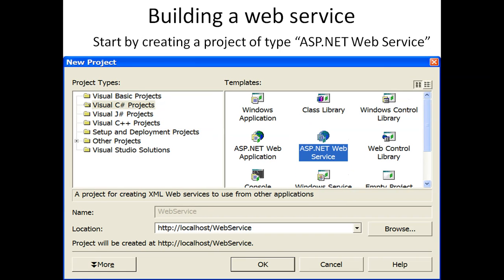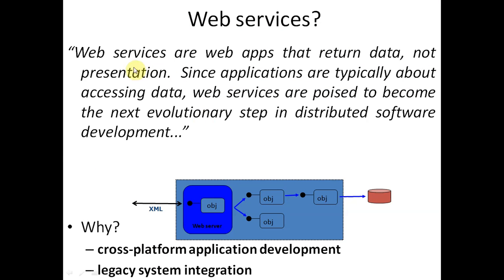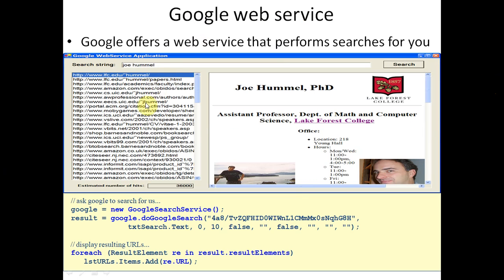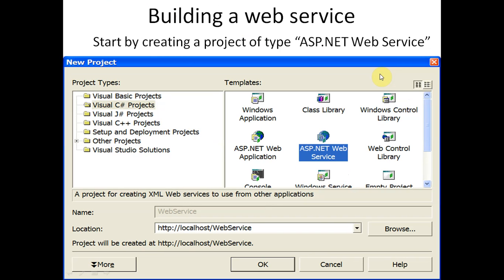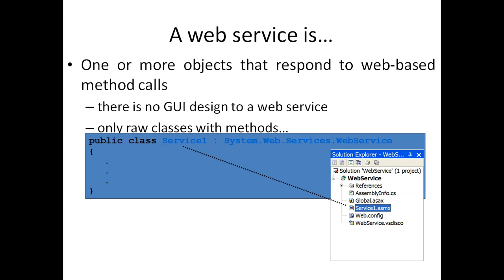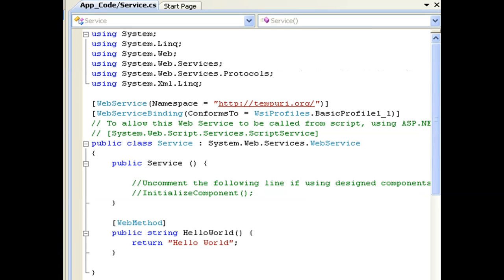Web services are web apps that return data, not presentation — that is how we get results using Google's web service. Now, how do we create web services? When we start a new project, we find ASP.NET Website as well as ASP.NET Web Services. We select ASP.NET Web Services, click on it, and a new window opens.